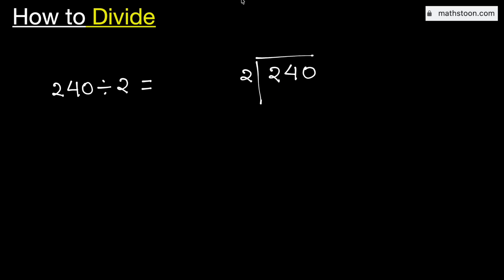Consider the first digit 2. We know that 2 times 1 is 2. Subtract, we get 0. Now 0 is less than 2. That is why we need to bring down this number 4 here.